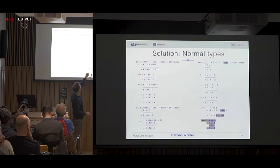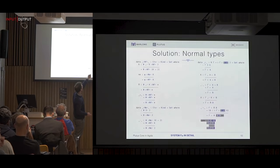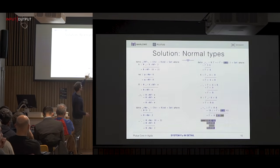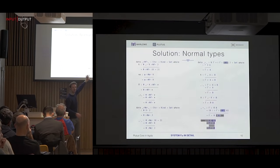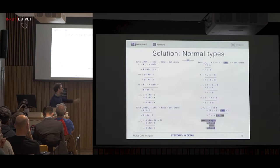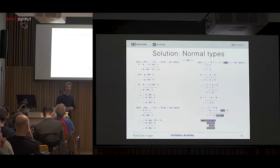We replace types with normal types, indexing terms by normal types. This is great because we can get rid of the conversion rule altogether — it disappears — because the types A and B are not just beta-equal, they're actually identical, so we don't need the rule at all.